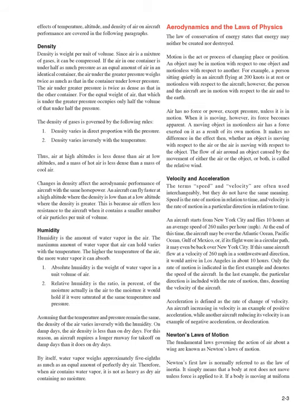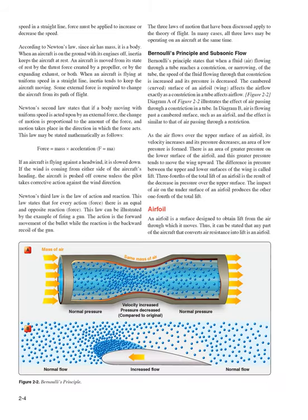Newton's Laws of Motion: Newton's first law, the law of inertia, states that a body at rest does not move unless force is applied to it, and a body moving at uniform speed in a straight line requires force to increase or decrease its speed. Since air has mass, it is a body subject to inertia. An aircraft is moved from rest by thrust force created by a propeller or expanding exhaust. Newton's second law states that if a body moving with uniform speed is acted upon by an external force, the change of motion is proportional to the amount of the force, and motion takes place in the direction the force acts: F = ma. If an aircraft is flying against a headwind, it is slowed down; if wind comes from the side, the aircraft is pushed off course unless the pilot takes corrective action.